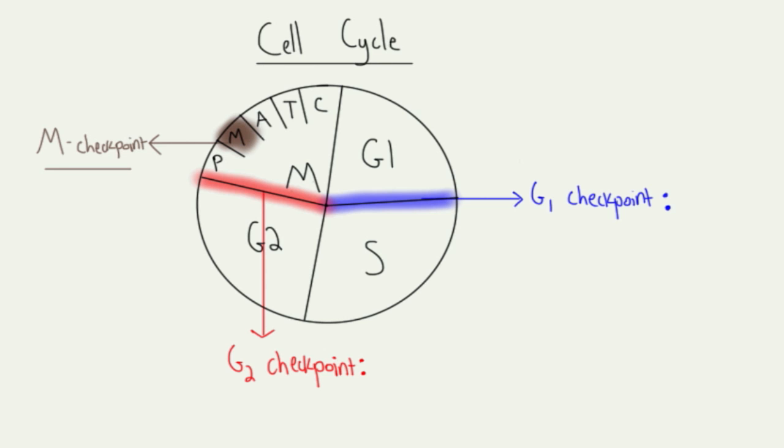Let's get the labels on there. We're going to call this one the G1 checkpoint, the G2 checkpoint, and the M checkpoint.